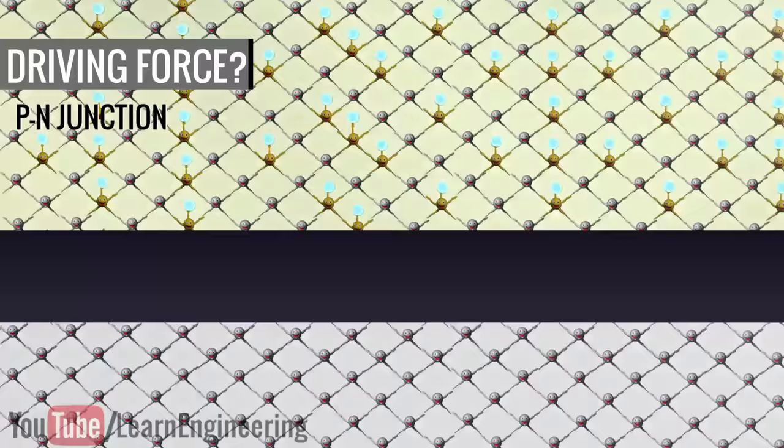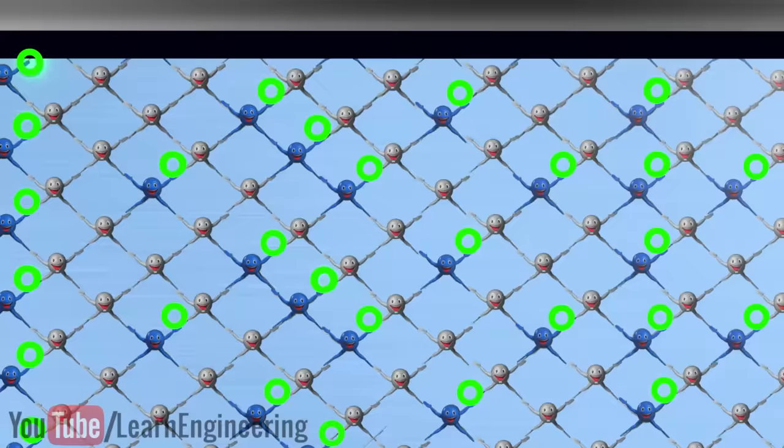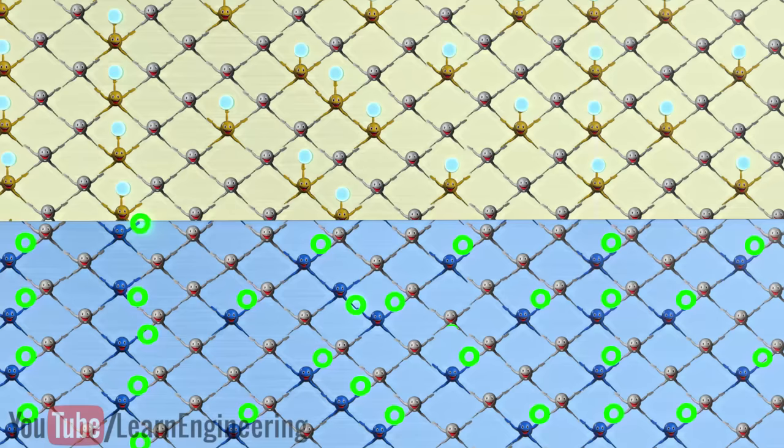Similar to N-type doping, if you inject boron with 3 valence electrons into pure silicon, there will be one hole for each atom. This is called P-type doping. If these two kinds of doped materials join together, some electrons from the N side will migrate to the P region and fill the holes available there.